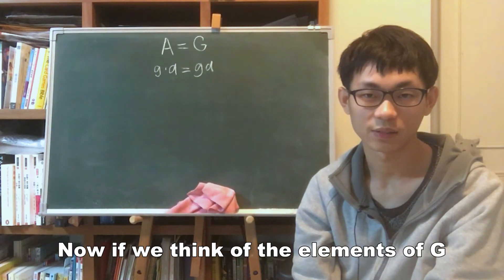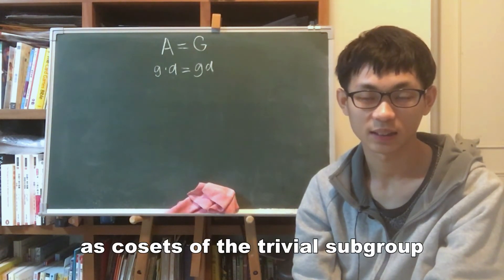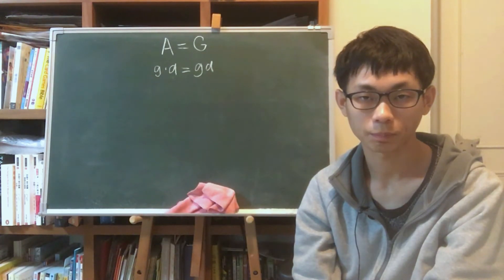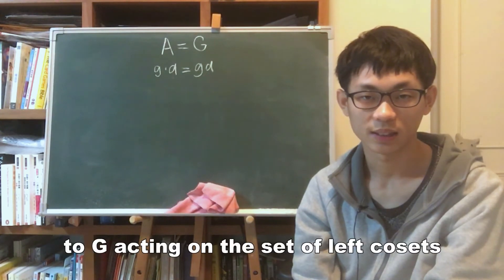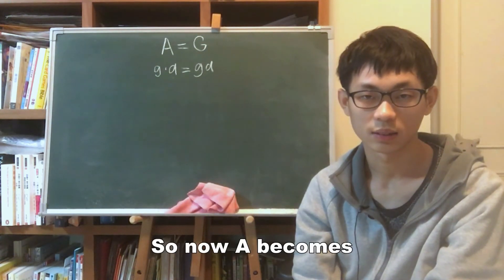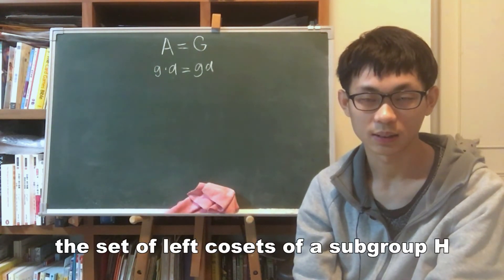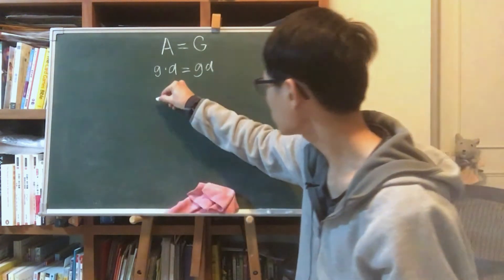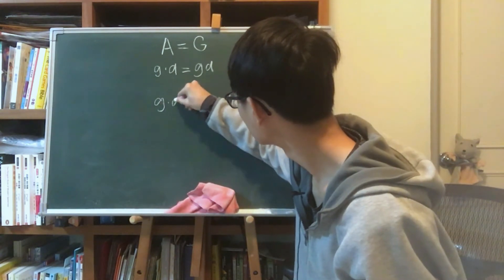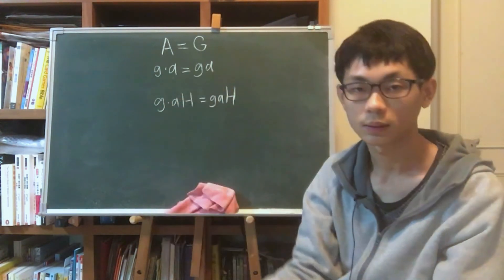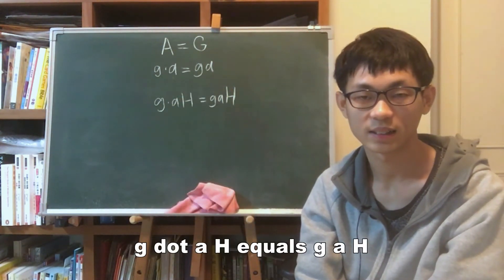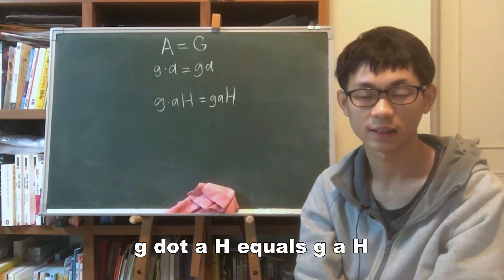If we think of the elements of G as cosets of the trivial subgroup, then we can generalize left multiplication to G acting on the set of left cosets of any subgroup. So now A becomes the set of left cosets of a subgroup H, and the action is defined by g · (aH) = gaH.